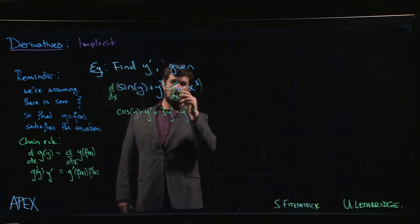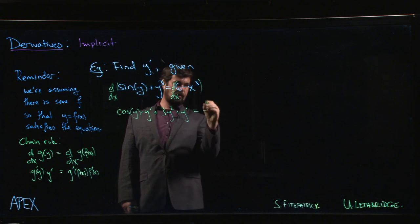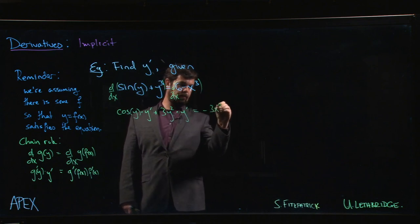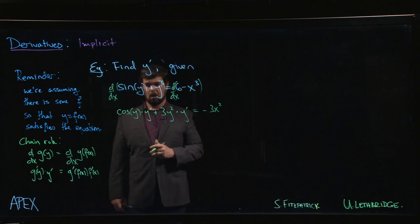The other side is a little bit more straightforward. Six is a constant. The derivative of x cubed is 3x squared.